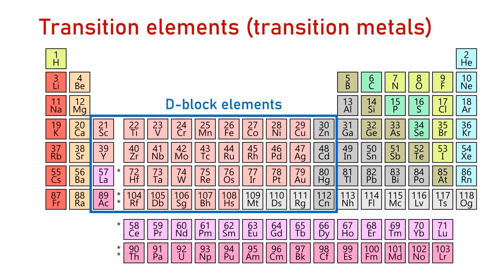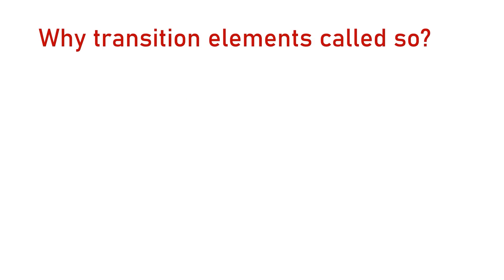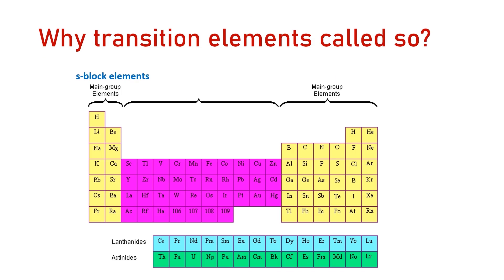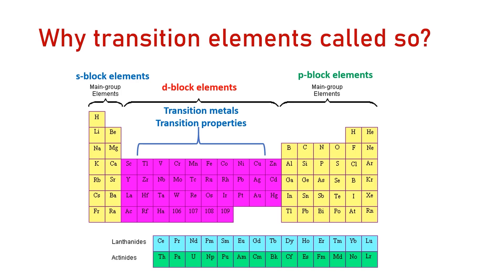Transition elements or transition metals are located in the middle of the periodic table, in the D-block. They are considered to be metals. They are called transition because they represent a transition behavior between the S-block metals and the P-block non-metals.